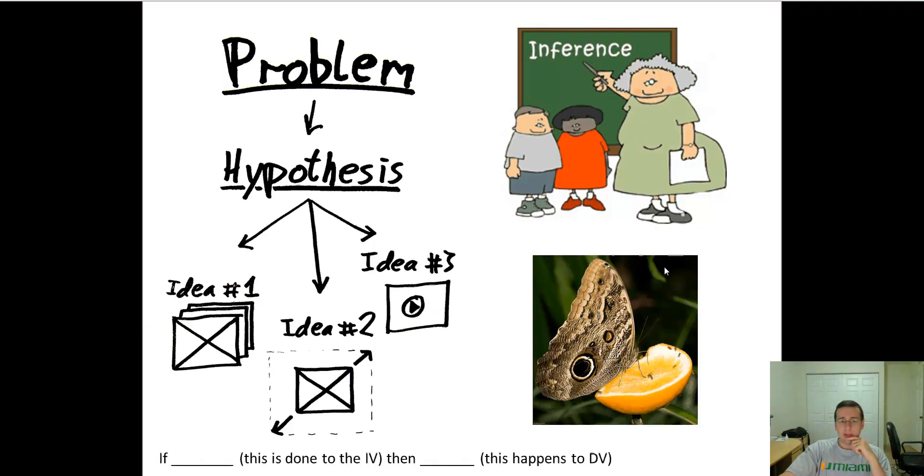Well, actually, that is a butterfly with an eye spot in it to try to dissuade predators from attacking it. So hopefully you caught that. Hopefully you had enough background knowledge to make that inference and get that right. But sometimes we'll make incorrect inferences because we do not have enough information.